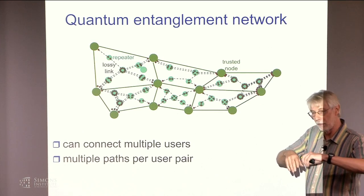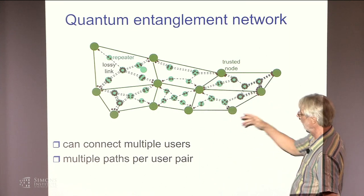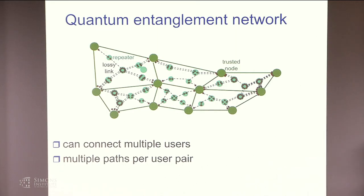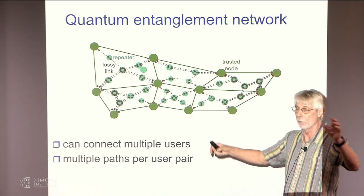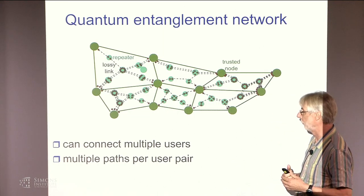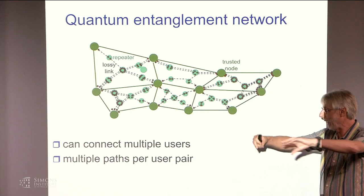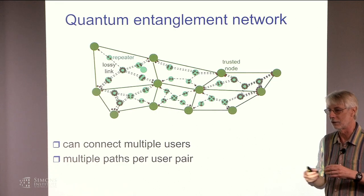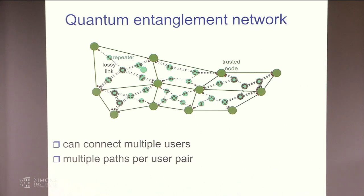And so now you can think of a quantum entanglement network then would be lots of these connected together just as you would see for a classical network. And this would now allow you could connect multiple users. And so they could all be these different pairs of users trying to generate end to end entanglements. Or you could think of it that you have multiple paths per user pair. And so you could try to take advantage of, let's say, the path diversity that you might have. And so I'll be talking about that.